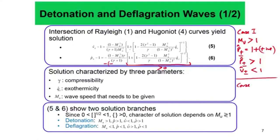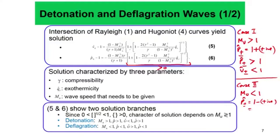Similarly, for case 2, mu is less than 1. When mu is less than 1, 1 minus mu-squared is inherently positive. Then minus times a positive quantity retains the minus sign, so p_cap plus or minus 1 is essentially 1 minus a positive quantity, which is less than 1. When mu is less than 1, p_cap plus or minus is less than 1 and v_cap plus or minus becomes greater than 1. Consequently, rho_cap plus or minus is less than 1 for mu less than 1, and rho_cap plus or minus is greater than 1 for mu greater than 1.